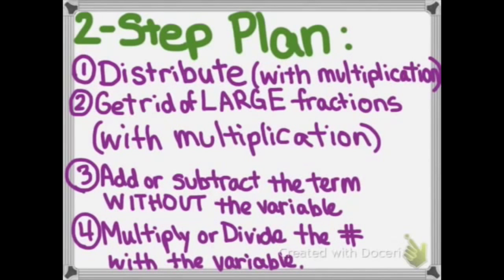There's actually a two-step plan, and the two-step plan is outlined right here. Write this in your notebook. We're first going to distribute with multiplication, if you have parentheses. Second, we're going to get rid of the large fractions with multiplication, only the large ones. Number three, add or subtract the term without the variable. And then four, multiply or divide the number with the variable.